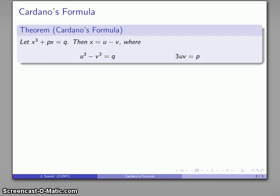If I have a cubic equation of the form x³ + px = q, this is a depressed cubic, there's no quadratic term, then my solution is going to be x = u - v, where u and v are two new variables that satisfy the following relationship: u³ - v³ = q, that's our constant term, and 3uv = p, that's our coefficient of x.